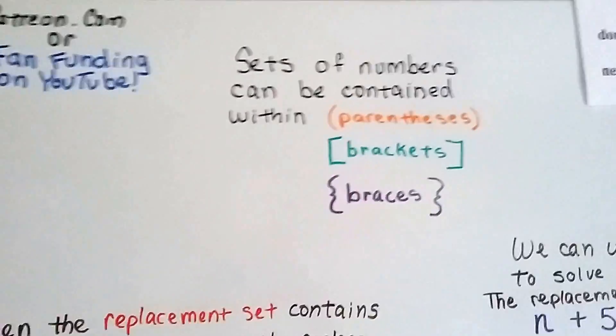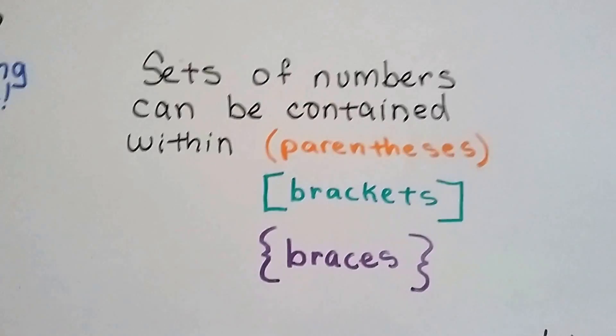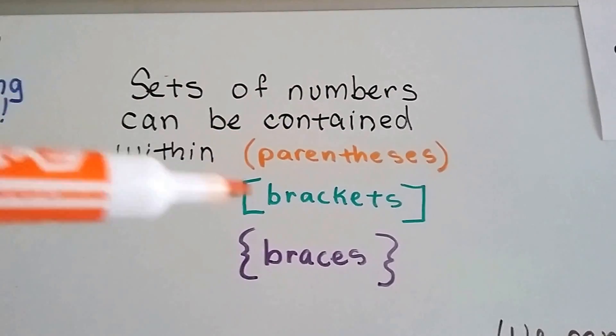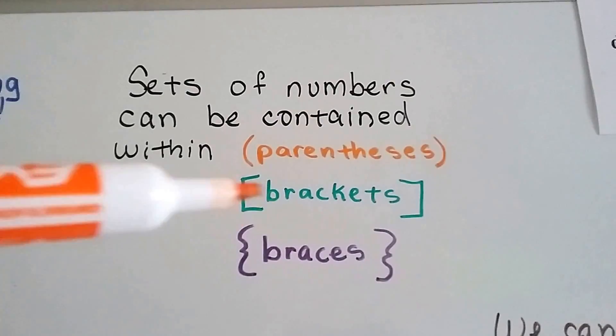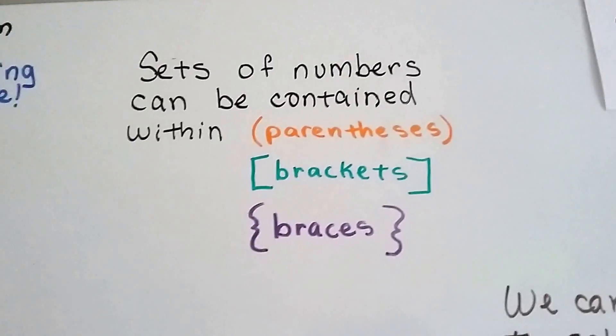So sets of numbers can be contained within parentheses. We know what those are. They're curved. Brackets, those are the boxy ones. And braces, those are the curly ones.